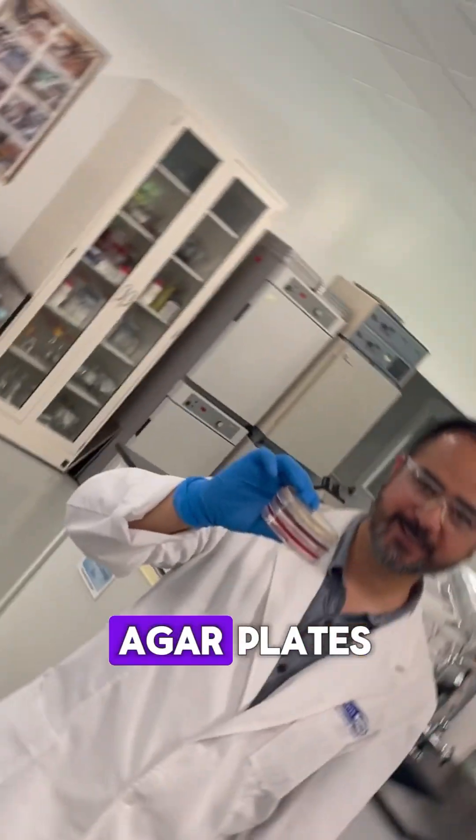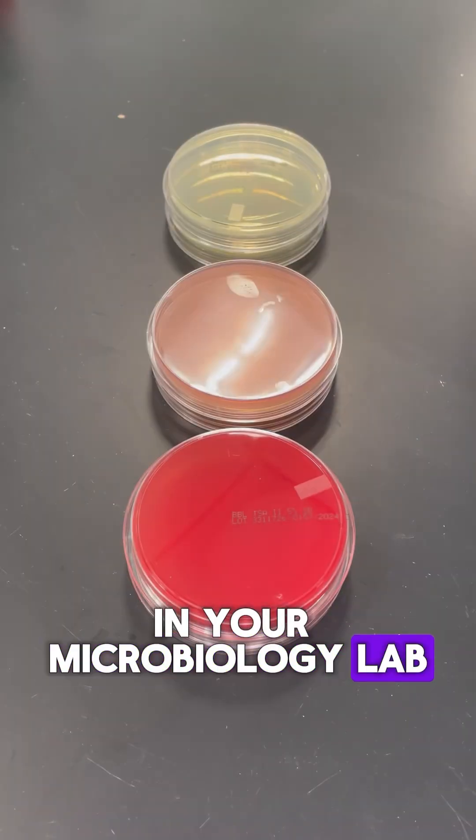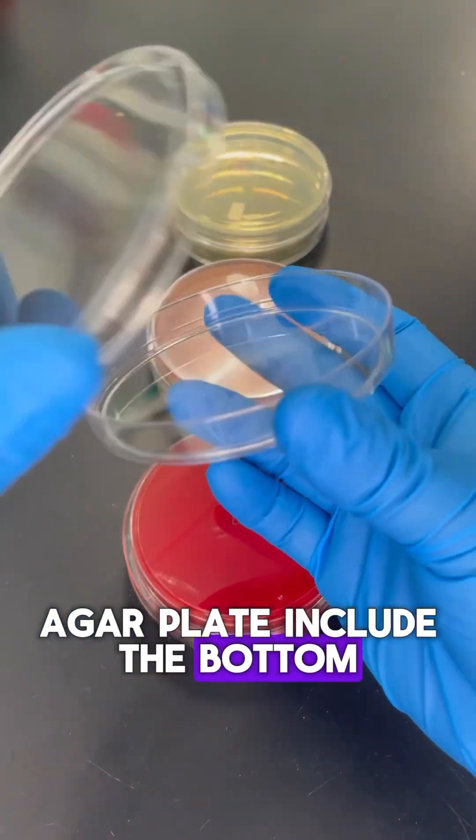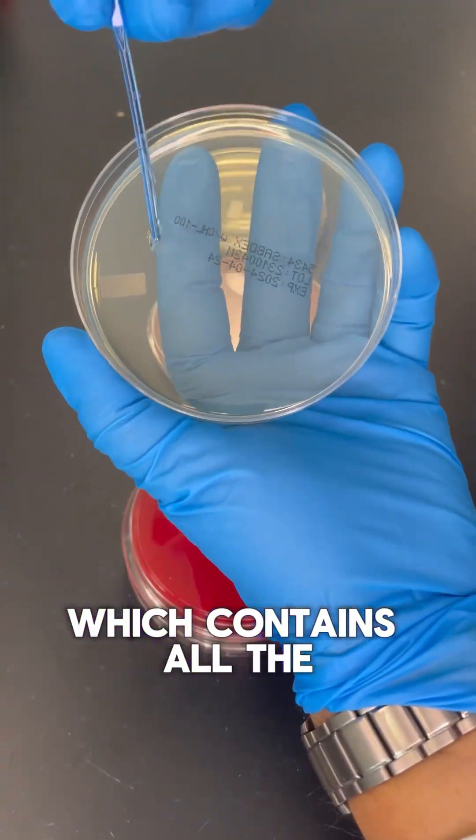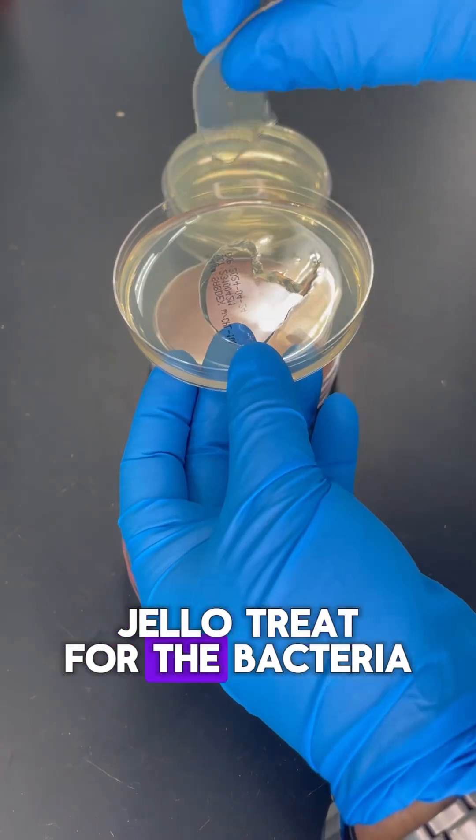Upside down is the proper way to incubate agar plates in your microbiology lab. The parts of an agar plate include the bottom, the lid, and the agar, which contains all the food for the microorganisms. It's like a thick jello treat for the bacteria.